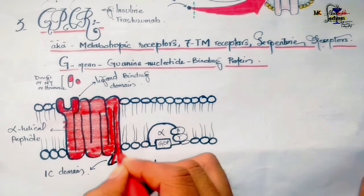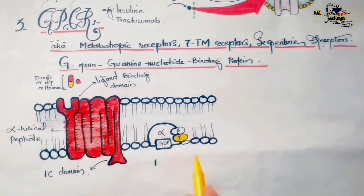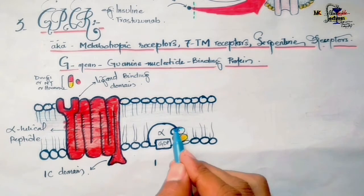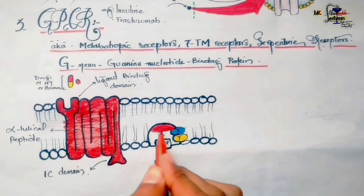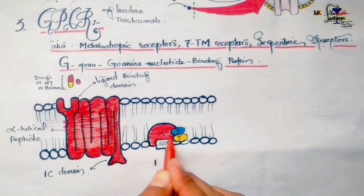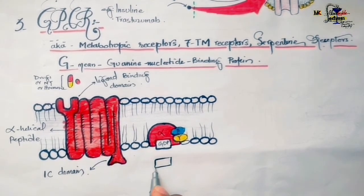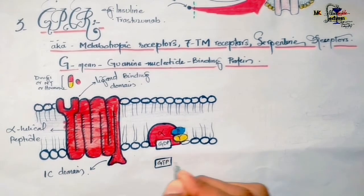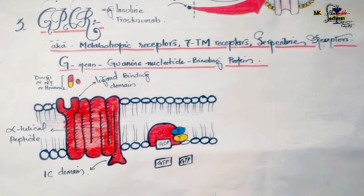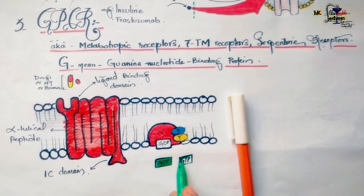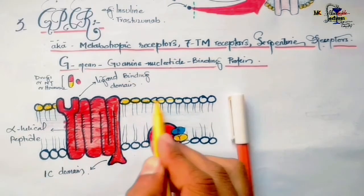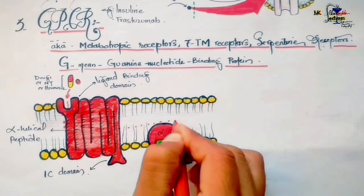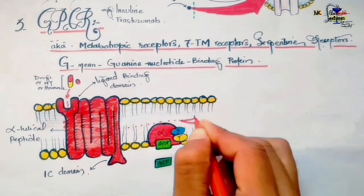In the absence of a ligand, G-proteins are not attached to the receptor. In this inactive state, GDP molecules are attached to the alpha subunit of the heterotrimeric G-proteins. When a ligand such as a drug, hormone, or neurotransmitter forms a complex with the receptor, only the alpha subunit interacts with the receptor, while the beta and gamma subunits remain attached to the alpha subunit.